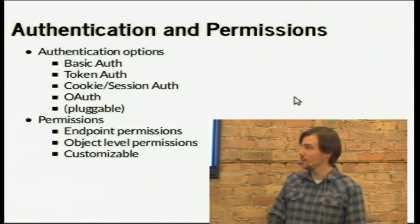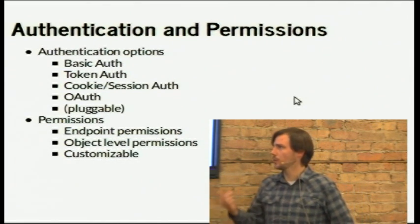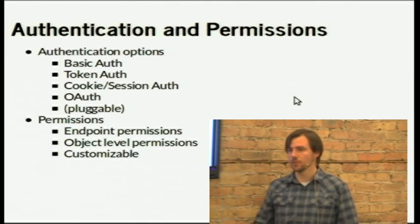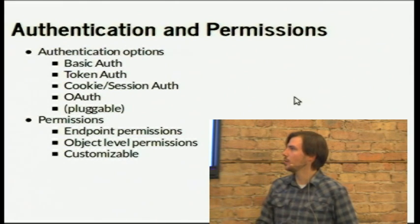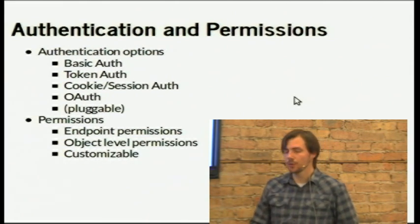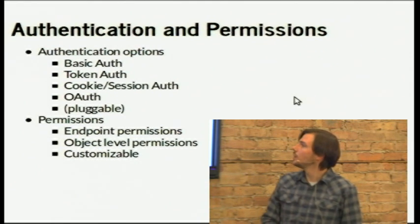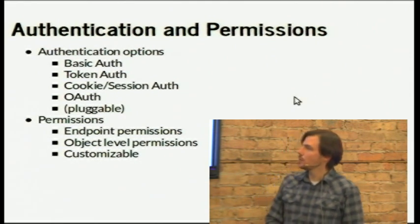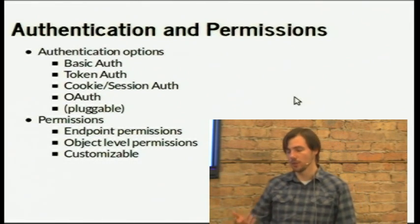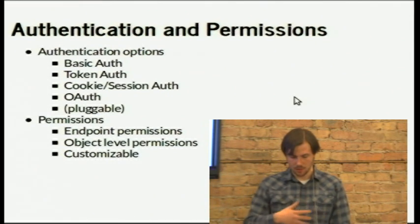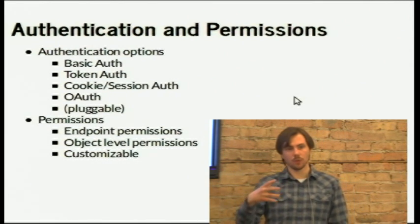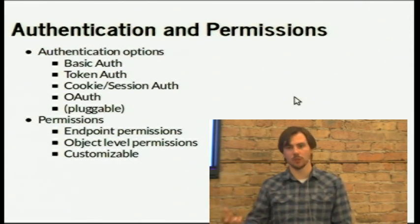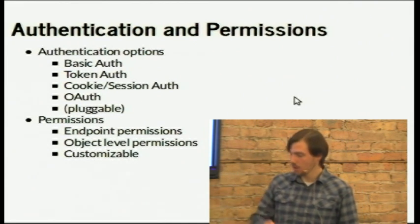There are a couple of different auth methods you can use: basic auth, token auth, cookie auth, and OAuth. We use token auth a lot because it gives you more flexibility. Cookie auth is sometimes applicable but not ideal. You can also set permissions based on the user's authentication level on an endpoint-by-endpoint basis — if you're this type of user, you can only access these endpoints. You can also do object-level permissions, and again, it's all customizable.